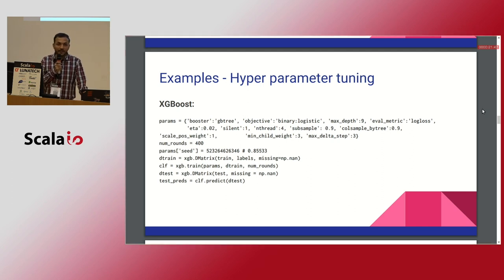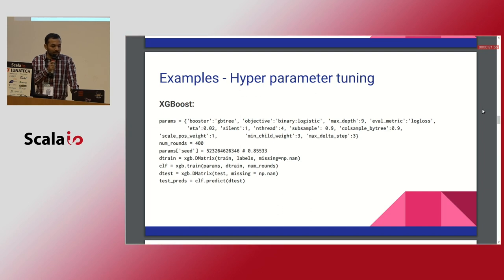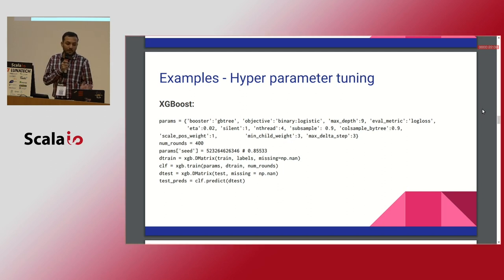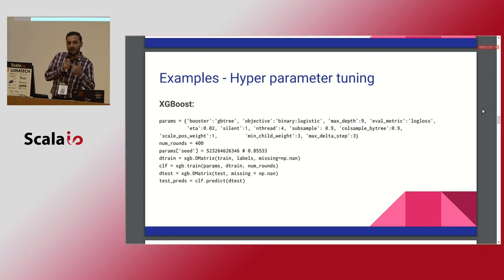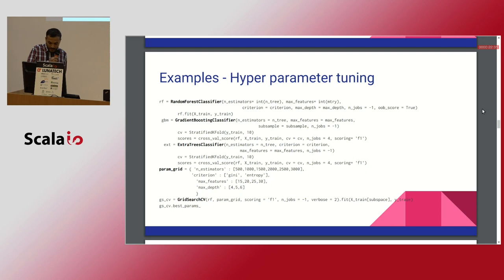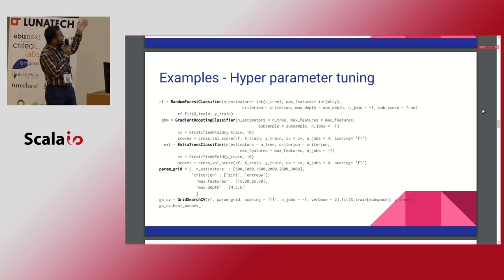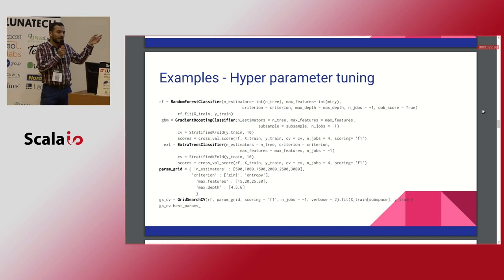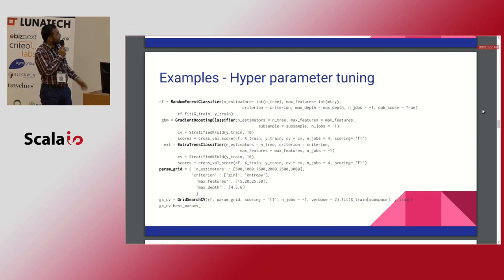Some examples to understand hyperparameter tuning terminology: for XGBoost you choose the booster in GBTree, objective, binary logistic, depth, metric, loss, eta, silent, entry, subsamples, sub-column-try, minimum weight, and delta step, then decide the number of rounds. Boosting of the tree can do parallelism internally. For a classifier like extra tree classifier, you use a parameter grid to figure out entropy or Gini, then do grid search CV to find which works better.